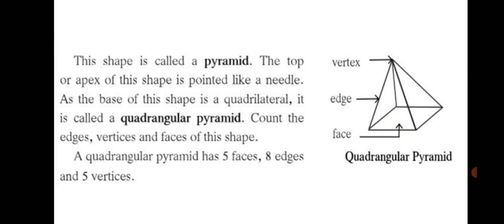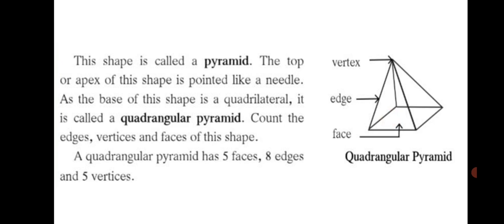Let's count the edges, vertices and faces of the quadrangular pyramid. Faces: bottom 1 face and 4 sides, so 4 plus 1 bottom, 5 faces. Edges: 4 edges below for the quadrilateral and 4 edges on top of each triangle formed, so 4 plus 4, 8 edges. Vertices: 4 vertices of the quadrilateral below and 1 at the top, total 4 plus 1, 5 vertices. Hence a quadrangular pyramid has 5 faces, 8 edges and 5 vertices.